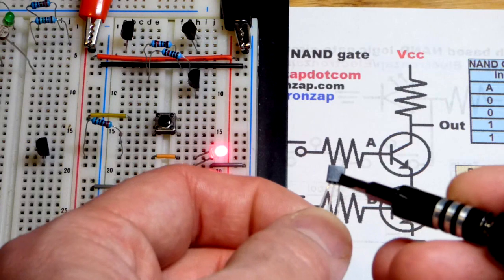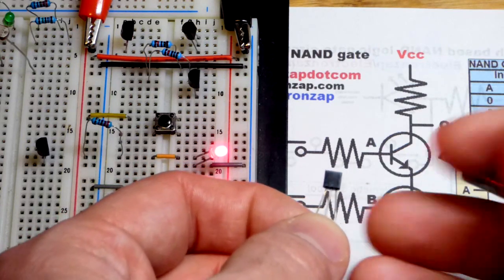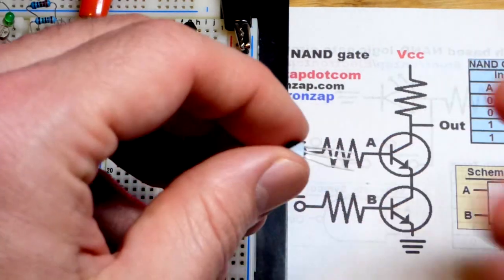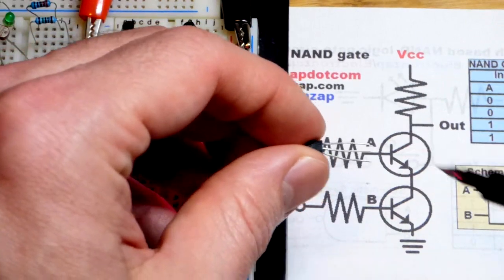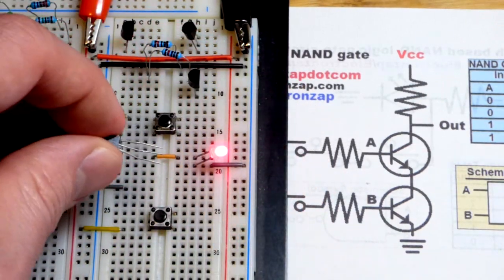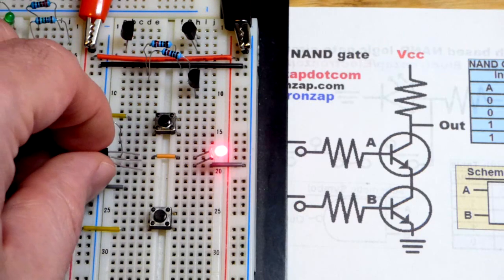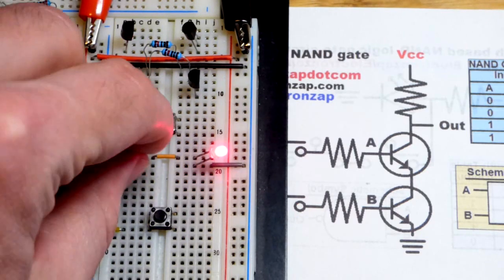The left pin is the emitter, middle pin the base, right pin collector. So emitter is the arrow. If I turn it this way, it lines up with what we see on the schematic right there. So the top pin, the collector, I'm going to put to the orange jumper right there.